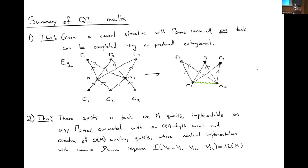Follow-up: couldn't agents implement a complicated unitary via teleportation? The speaker notes that would require pre-shared entanglement, and the key asymmetry is: on the bulk side, agents have no pre-shared entanglement but do have a causal meeting point; on the boundary side, they have no causal meeting point but do have pre-shared entanglement. One could imagine generalizing by adding some entanglement on one side, possibly getting a weaker constraint on the other, but the current theorem is proven under these clean assumptions.